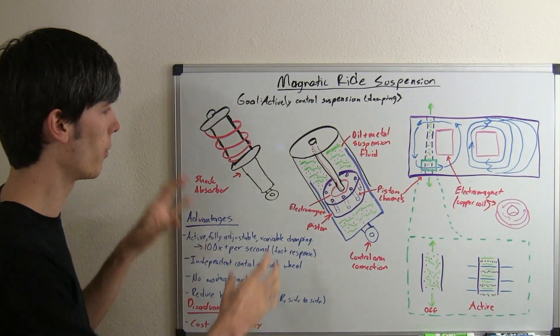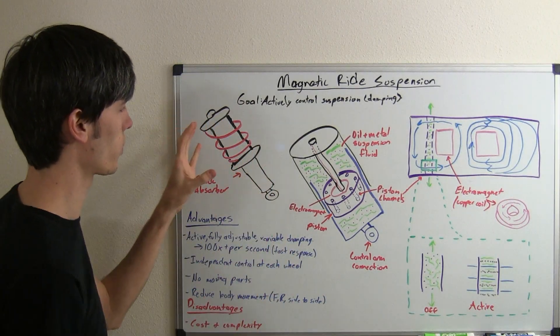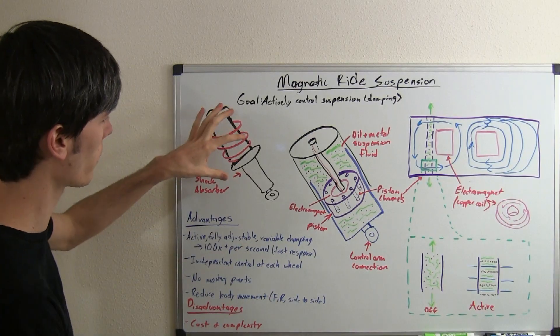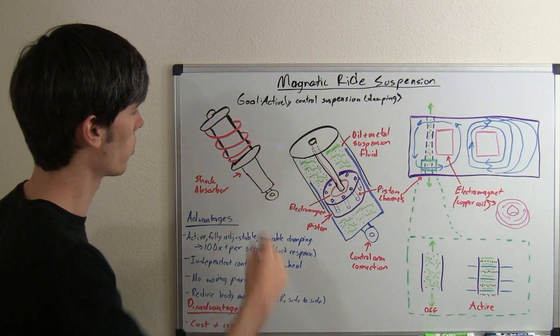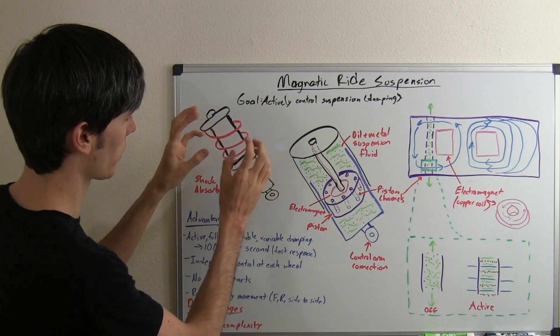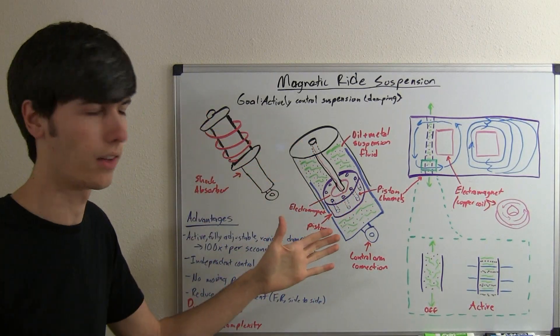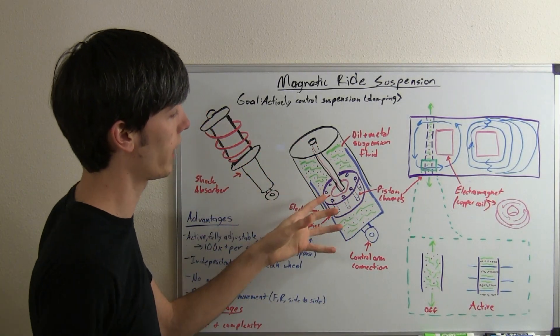So, how does it do that? Well, most of the action all occurs within the shock absorber itself. So here we've got our strut or our coilover shock absorber, and we're going to take a detailed look inside and see what's going on inside of this.